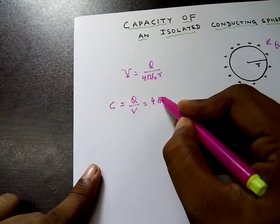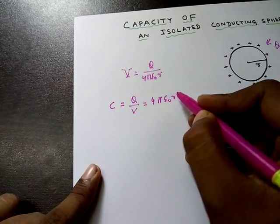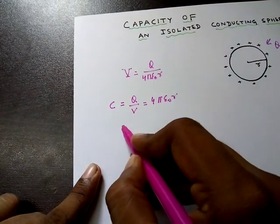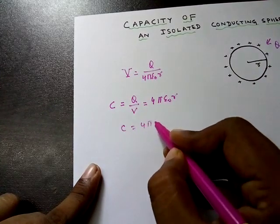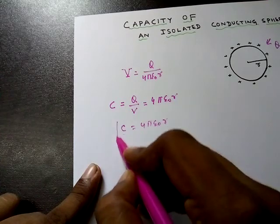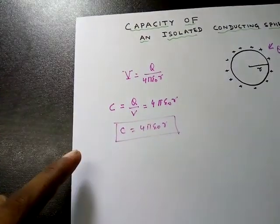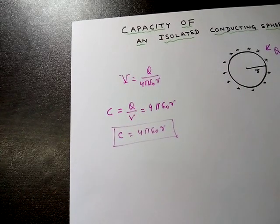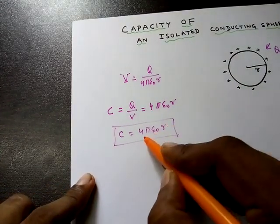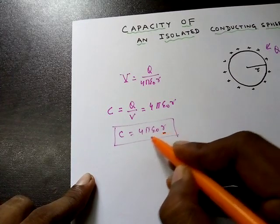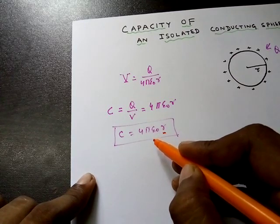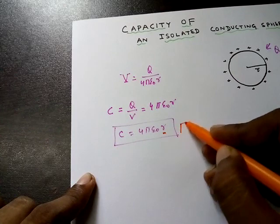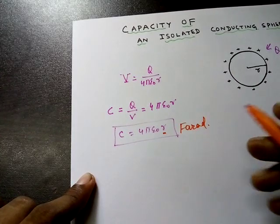So C will be equal to 4πε₀R. This is the value in SI system. We are just multiplying the radius with 4πε₀R. This is the value in SI system.